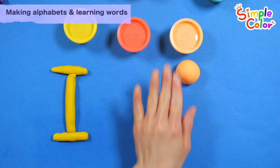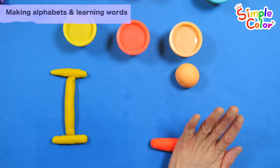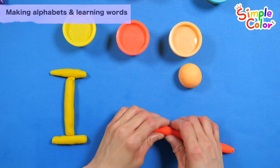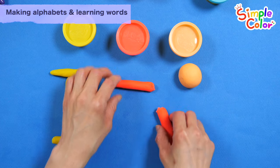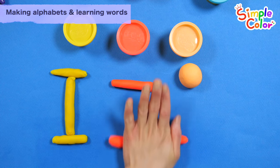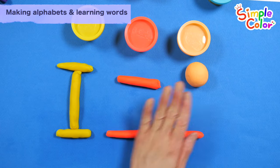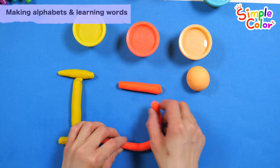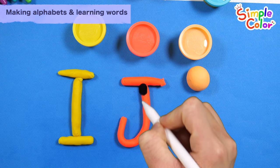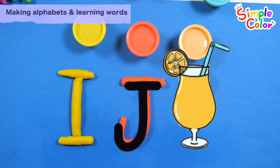Shall we make the round clay thin and long? Cut it to the desired length and make the alphabet. J. Juice. J. Juice.